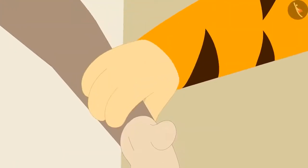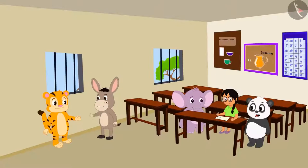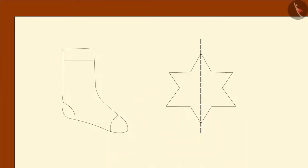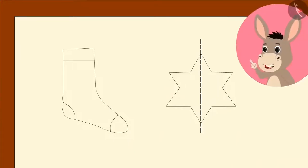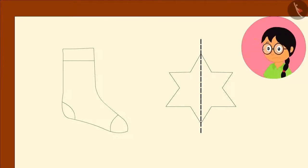Shere Khan takes Bola to one corner of the classroom and says, 'Bola, you are very clever. Can you teach Minu a lesson by proving that her magic is a failure?' 'Ok, I will help you,' Bola said. Bola draws a sock on the paper and tells Minu, 'Can you divide this image into two similar parts by using a dotted line?' Minu thinks a lot and says, 'No, I can't.'